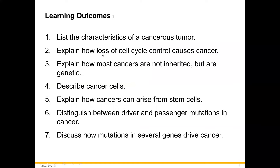Learning outcomes. After studying this chapter, students will be able to list the characteristics of a cancerous tumor, explain how loss of cell cycle control causes cancer, explain how most cancers are not inherited but are genetic, describe cancer cells, explain how cancers can arise from stem cells, and distinguish between driver and passenger mutations in cancer.